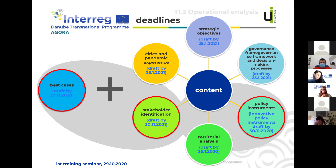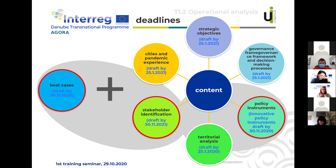Because many activities are overlapping, the guidelines specify which parts of the analysis are needed first. Partners are asked to provide the description of best cases, stakeholder identification, and policy instruments chapters by the end of November. Other chapters can be completed later. This content is critical because policy instruments and best cases form part of the Agora toolkit, which needs to be developed by the end of the year and will be useful when co-designing urban regeneration agendas with stakeholders in workshops.